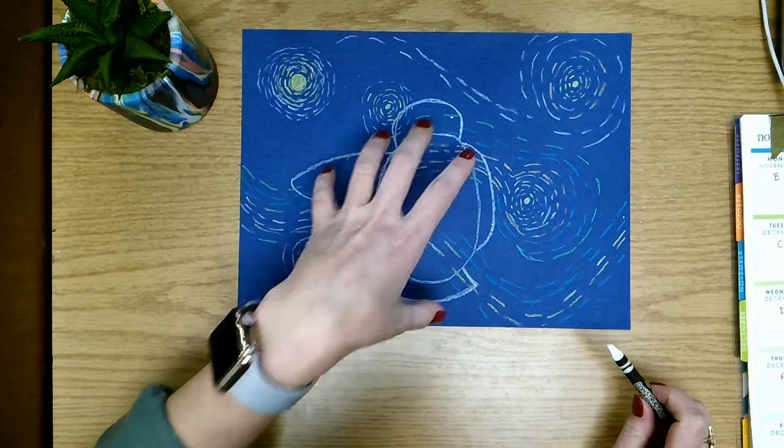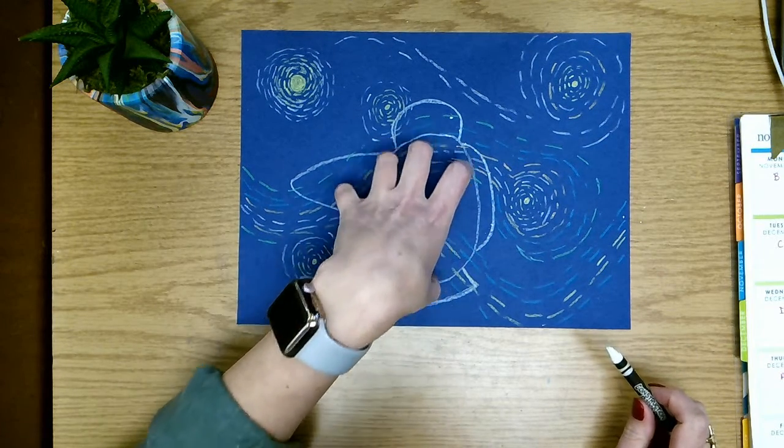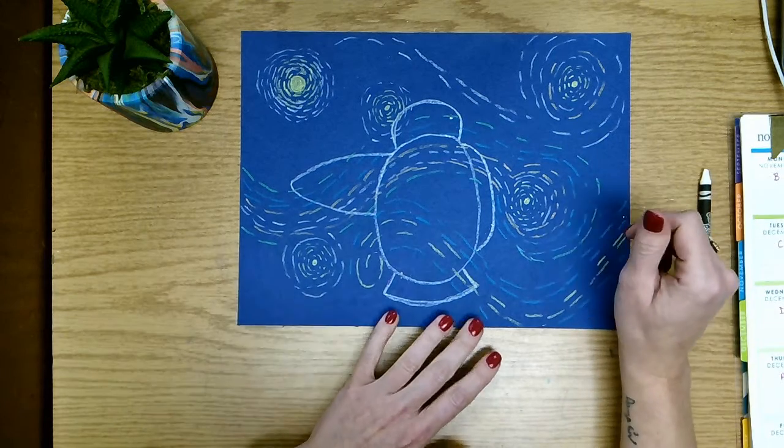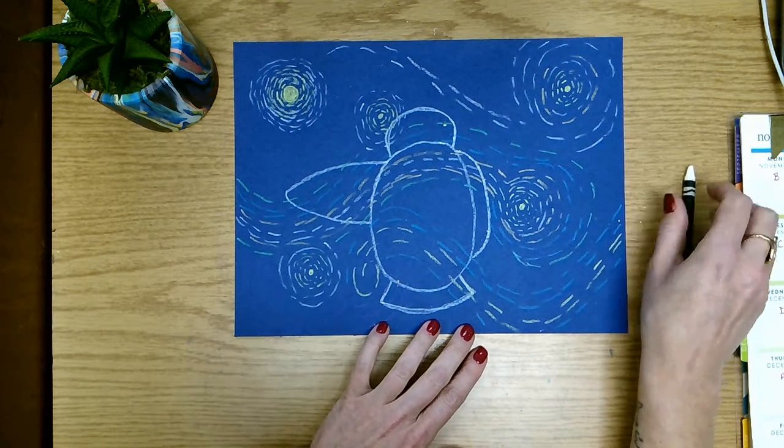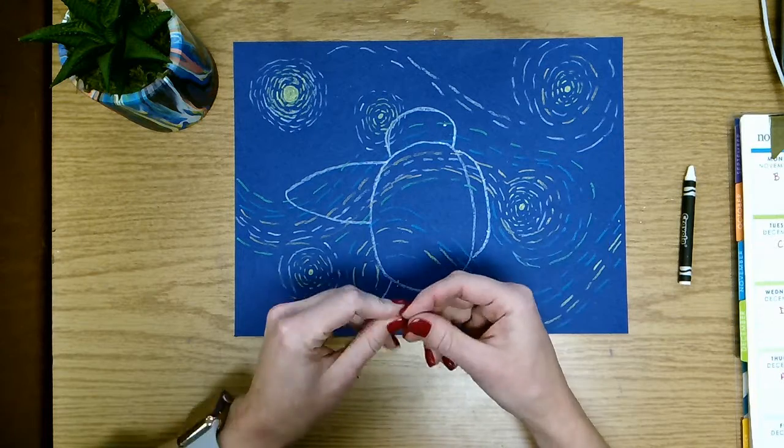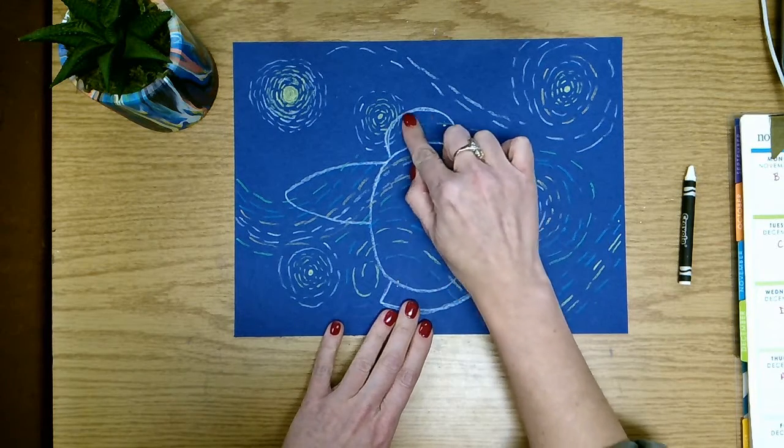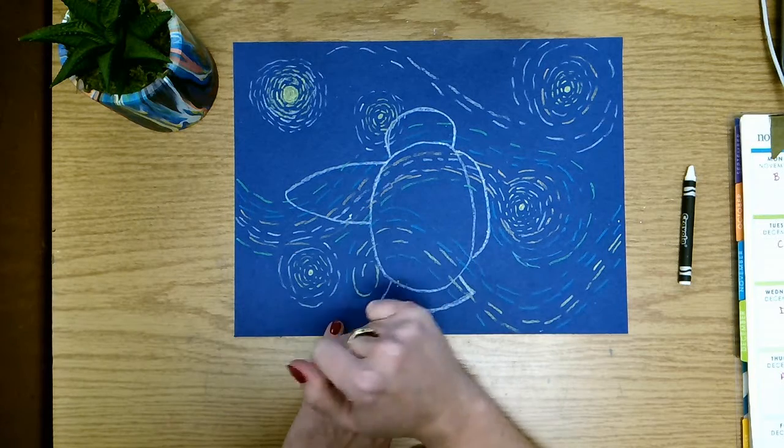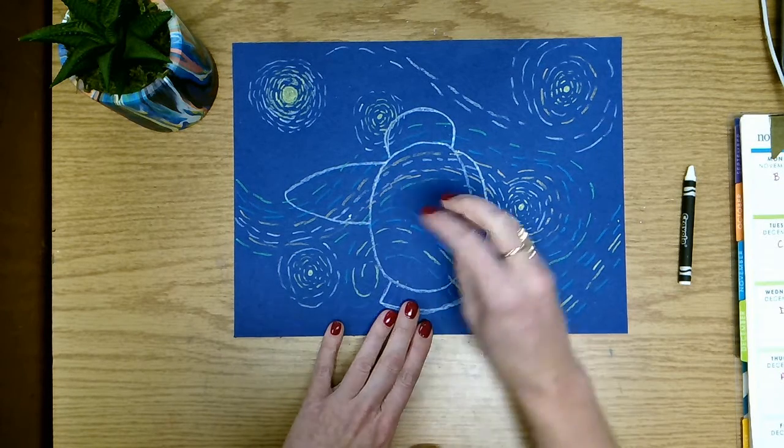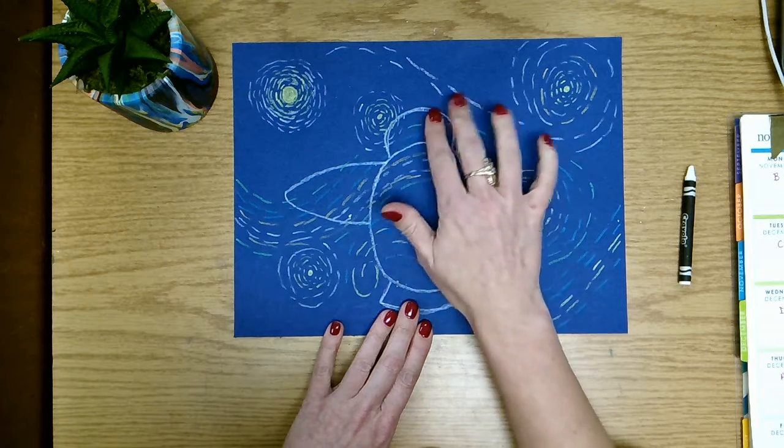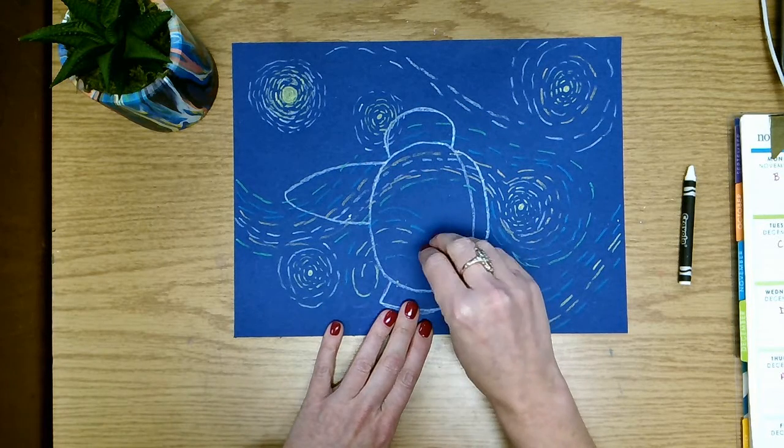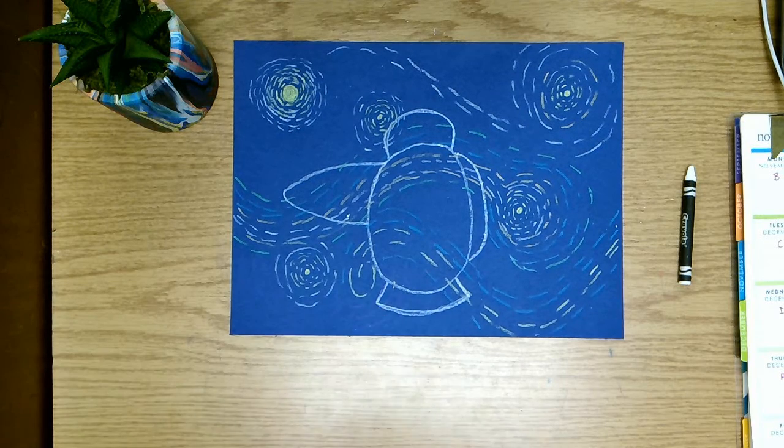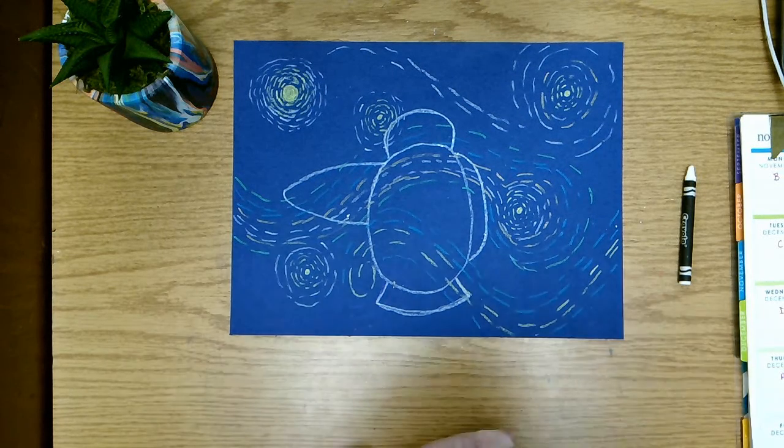After we draw this, we will start thinking about what colors we might want our owl's body to be. And then we'll be using torn pieces of paper and gluing them inside the shapes that we just made in order to make his feathers be an actual texture. So that when you touch your owl, you will actually feel the texture of the feathers on his body. So we'll work more on those feathers next time.